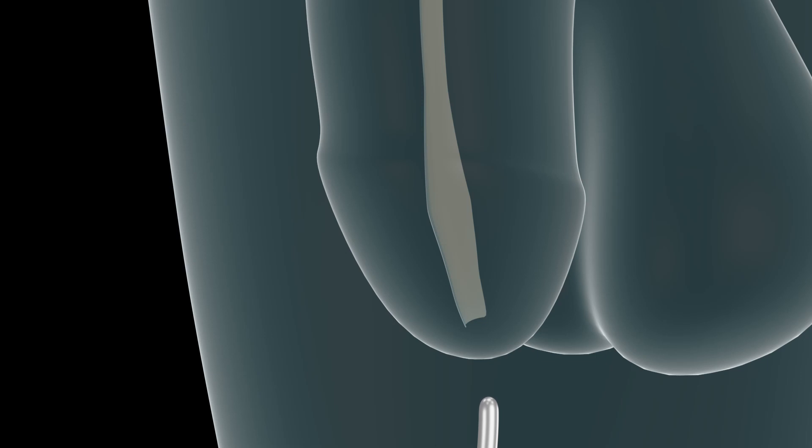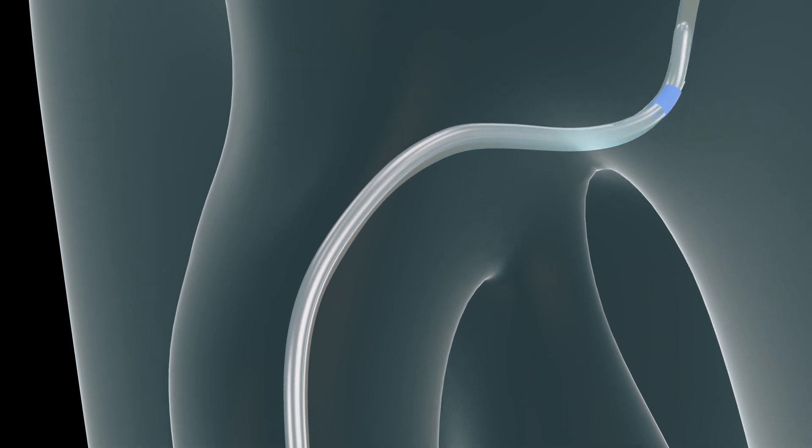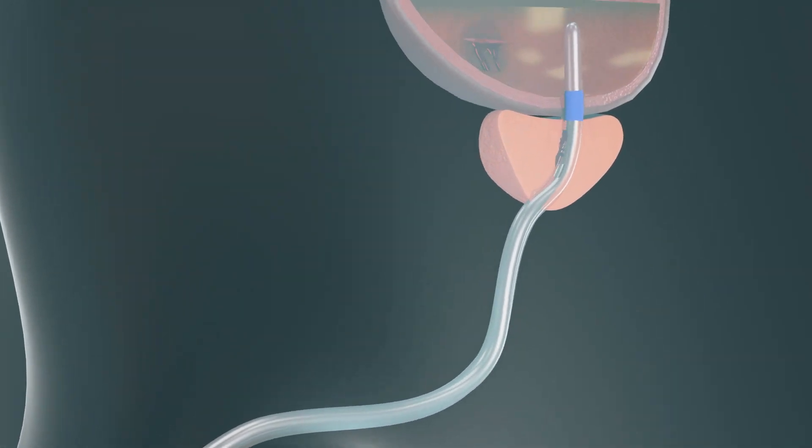The catheter is placed exactly the same as a traditional three-way Foley catheter. It is inserted through the urethral meatus, passed through the penile urethra, through the prostatic urethra, and into the urinary bladder.